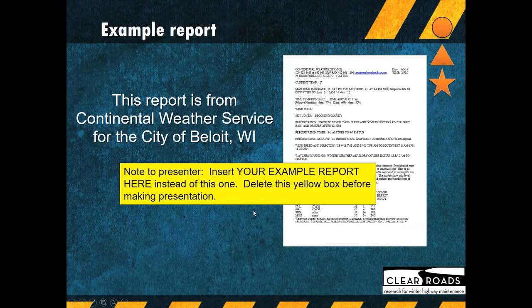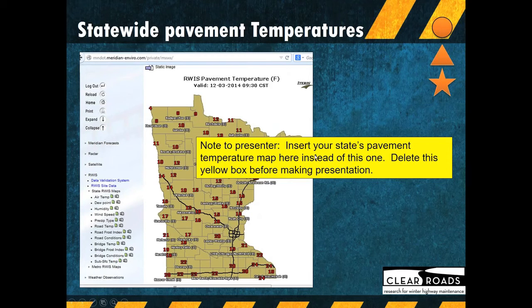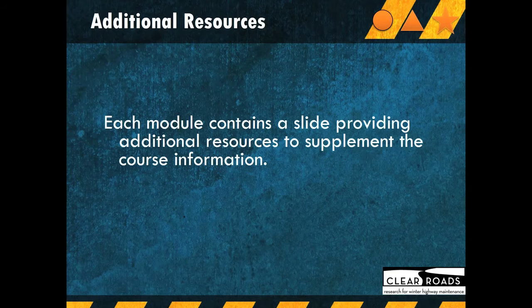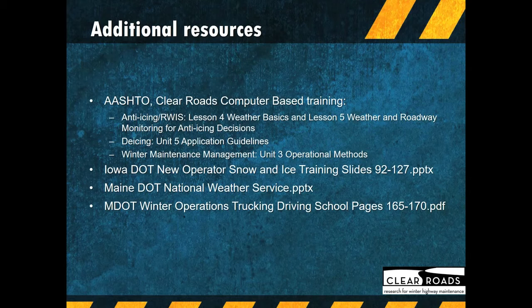Here are a few more examples — for instance, an ARWIS example. A presenter could choose to leave this in or substitute their own. Both Connie and I felt it was valuable to include good examples so that if someone at a small truck station doesn't have access to these resources, they could still show them as an example — serving two purposes. At the end of each module, there's a separate area providing additional resources for each content module to supplement the course, also outlined in the instructional booklet.